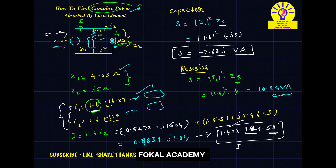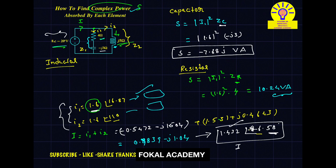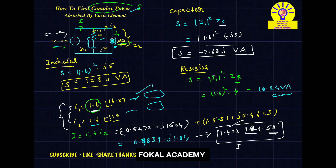Finally, for the inductor, the same procedure applies. Complex power S equals magnitude of I2 squared into ZL. The current in the inductor is I2, with magnitude 1.6. So 1.6 squared into ZL, where ZL equals J5. By simplifying, we get j12.8 volt-ampere. This is the complex power for the inductor. So for the given circuit, these are the complex powers observed by the corresponding elements — capacitor, resistor, and inductor.